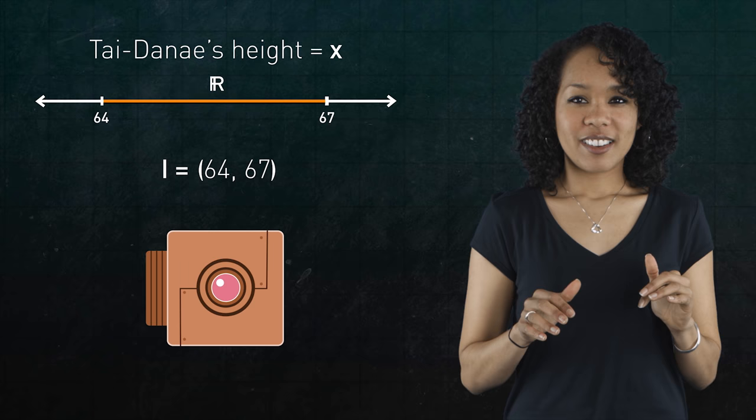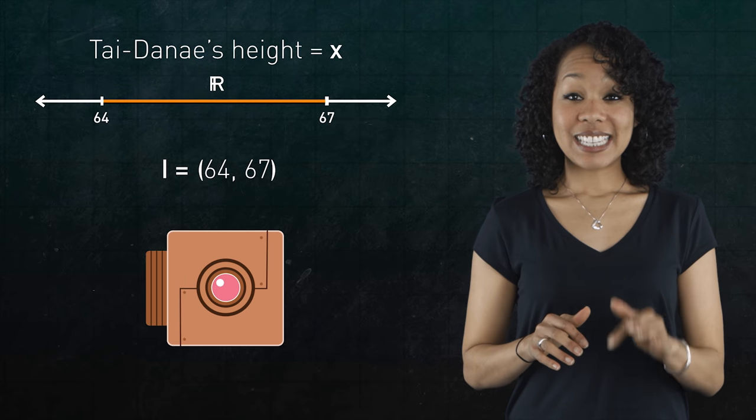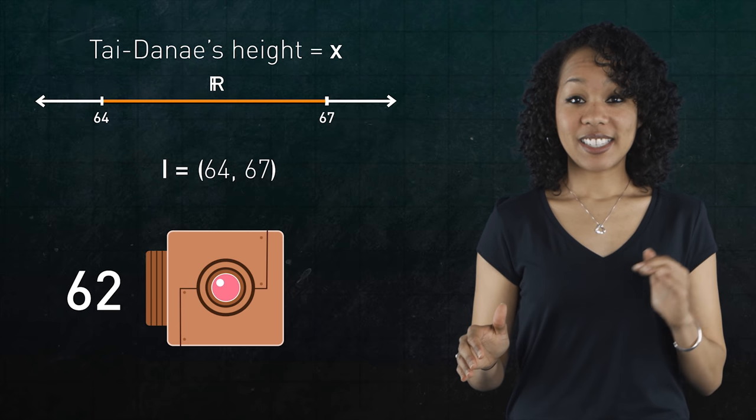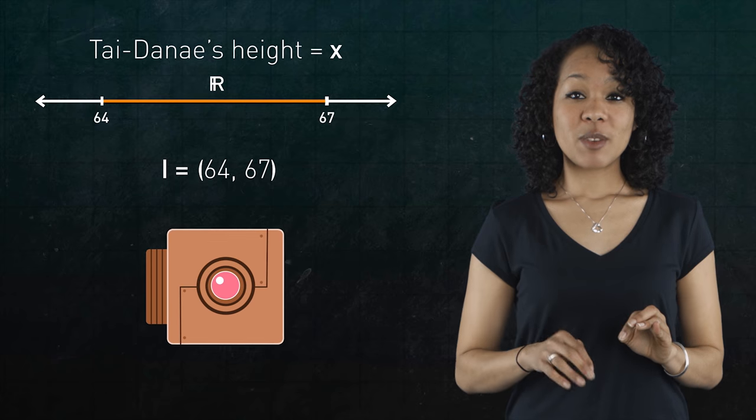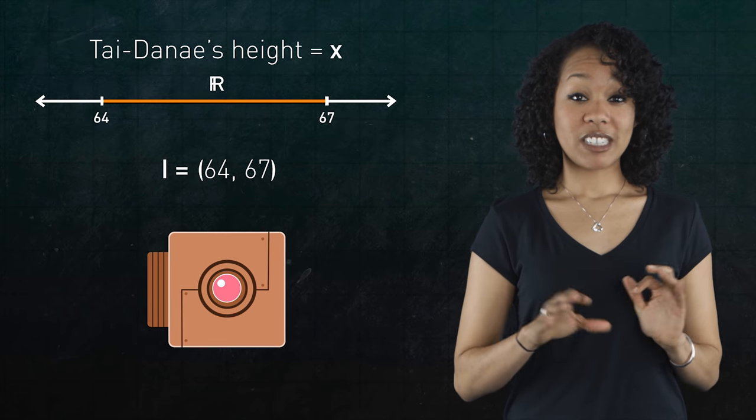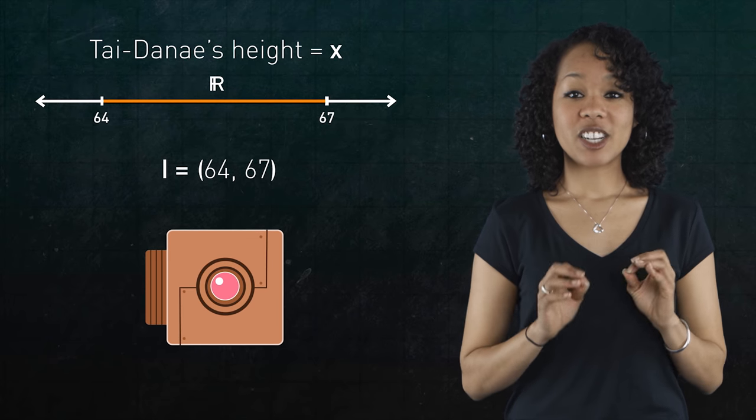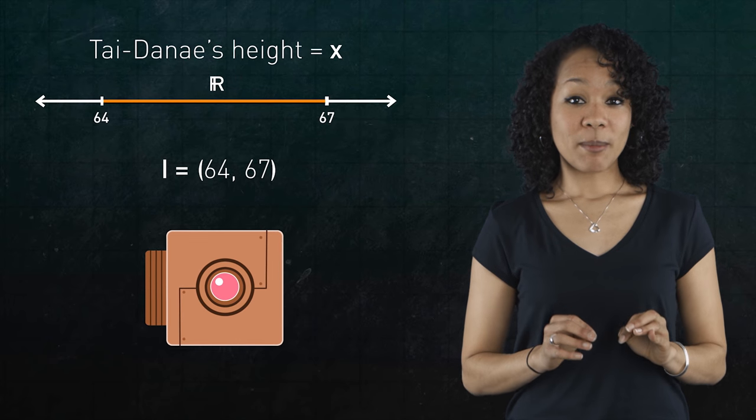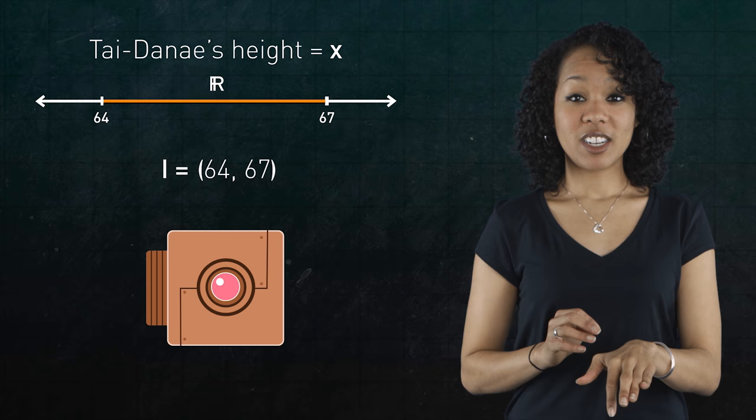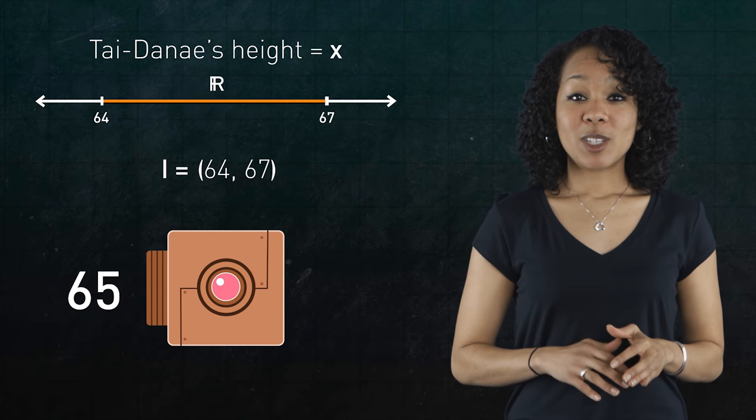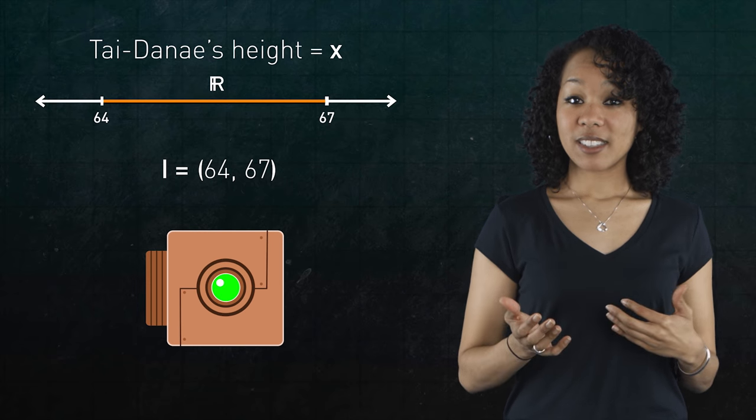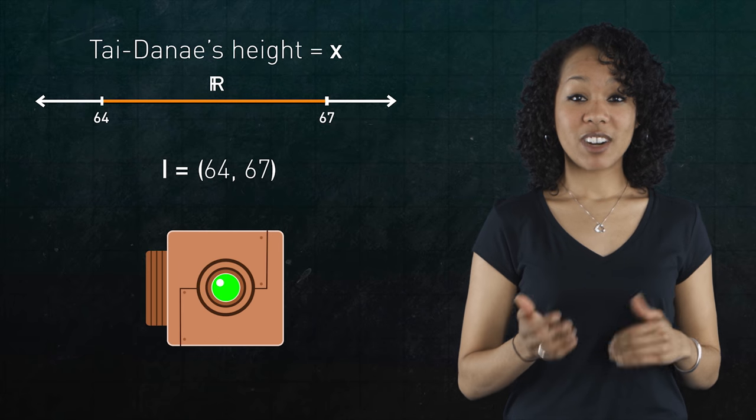But it's a funny machine. If you feed in a number that is not in between 64 and 67, then the machine will keep running forever and ever and never stop. So that's how you can figure out if my height is in a certain range. Just guess a number and feed that number into the machine. If your guess is in between 64 and 67, the machine terminates. If not, the machine keeps running.